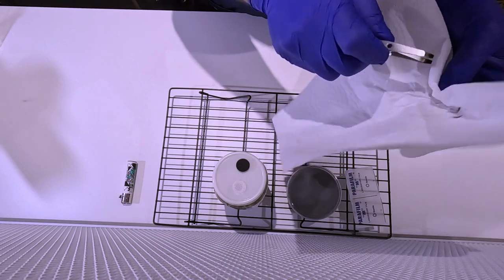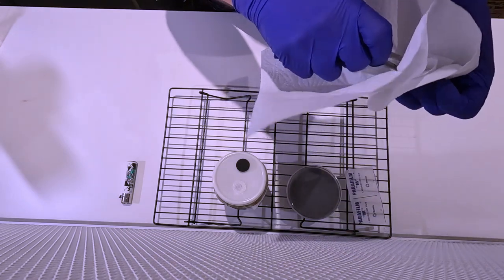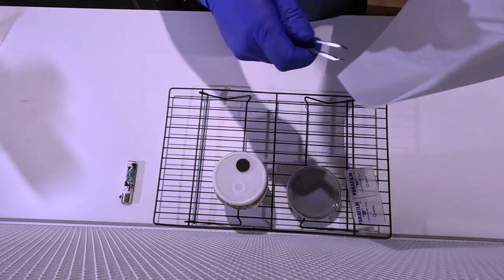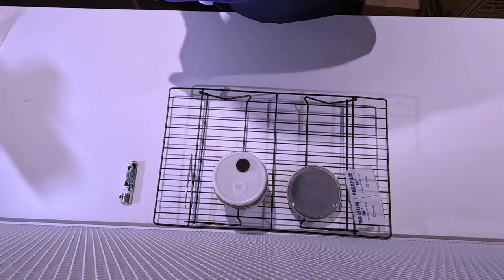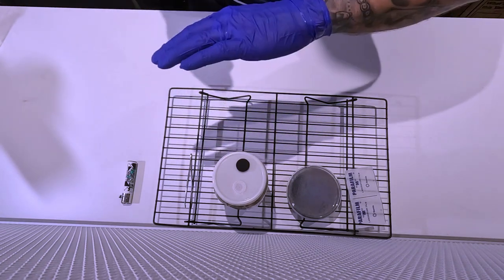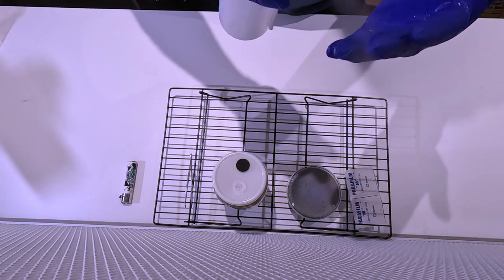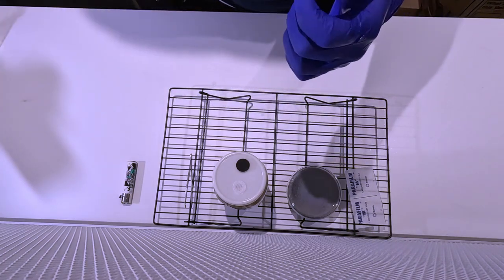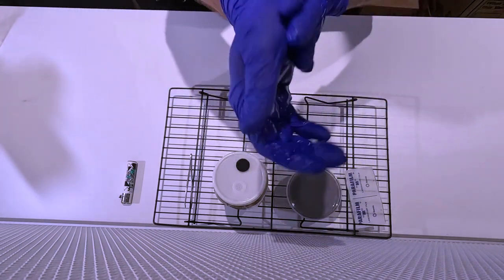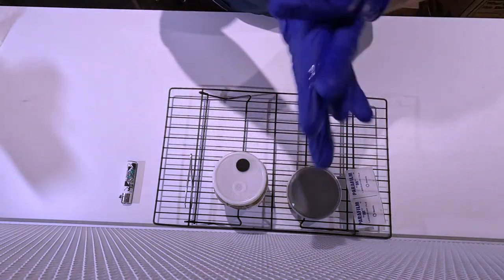Take your time with all of this. You move slowly and deliberately. You don't want to create any adverse airflow bringing in any nasties. Again, my hands have been outside of the flow, so I put a bit of iso on them, give them a little bit of a rub in front of the flow hood. We know that everything's all good.